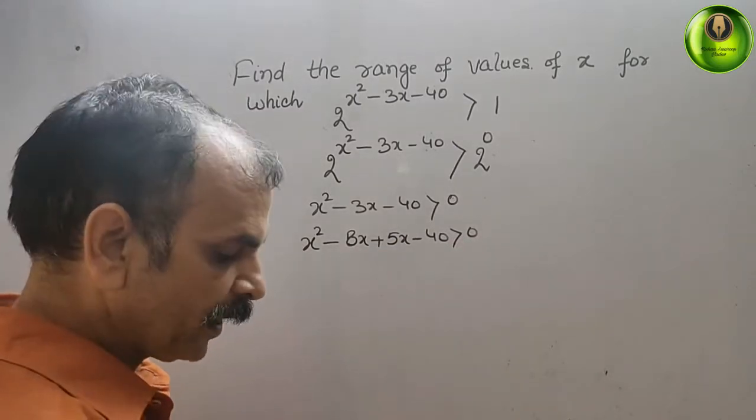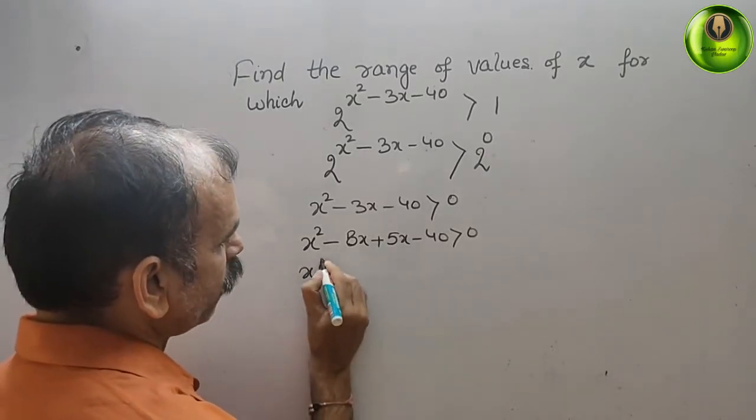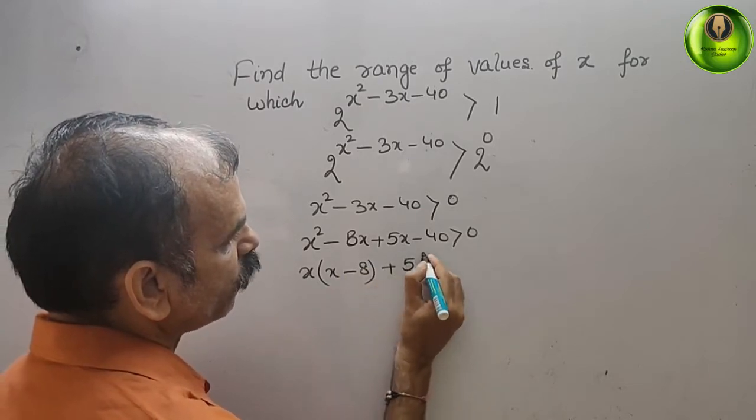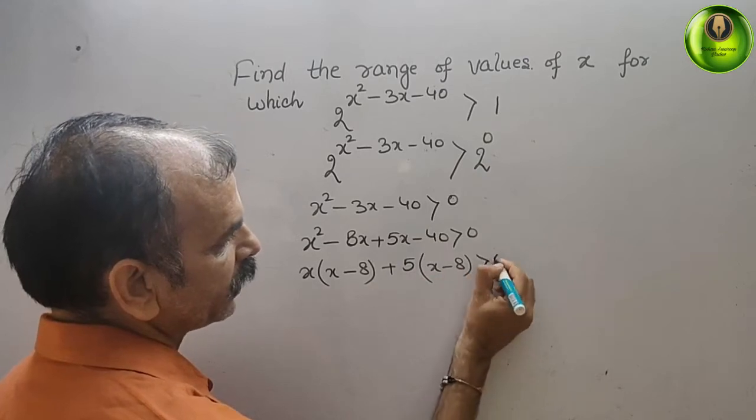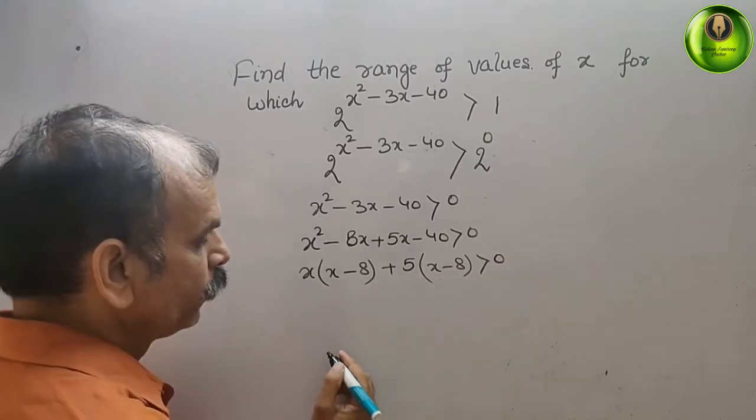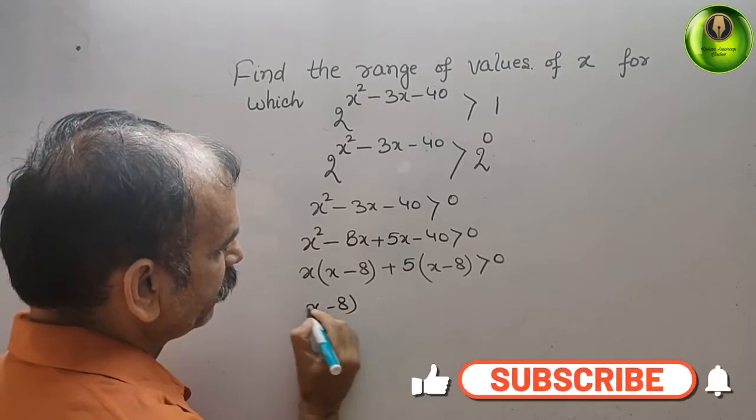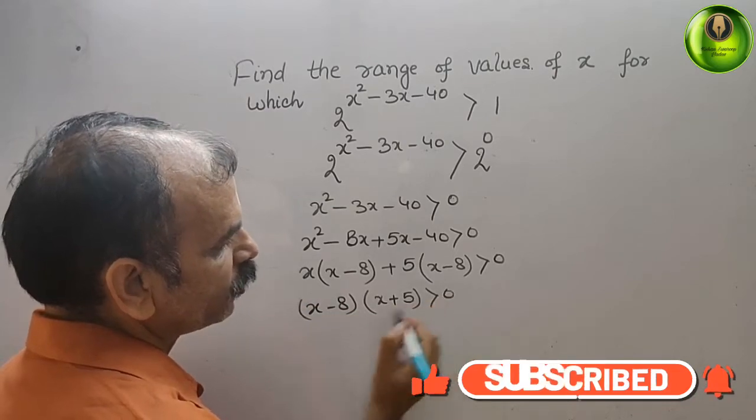See this. x is common, here you will get x minus 8. Here plus 5 is common, again you will get x minus 8, that is greater than 0. So now the two factors are x minus 8 and x plus 5 is greater than 0.